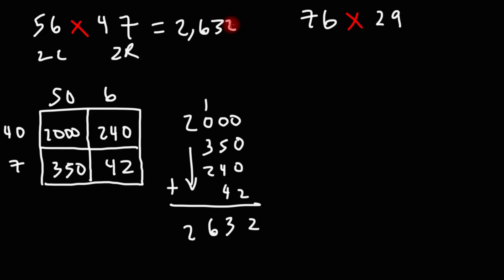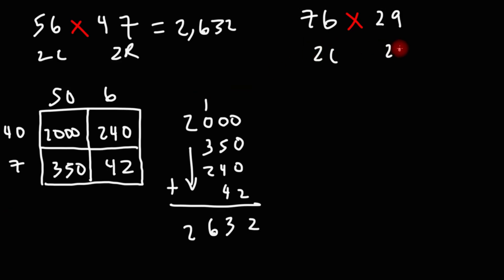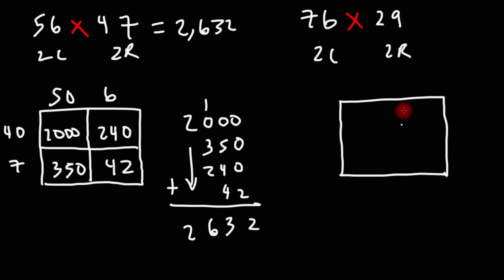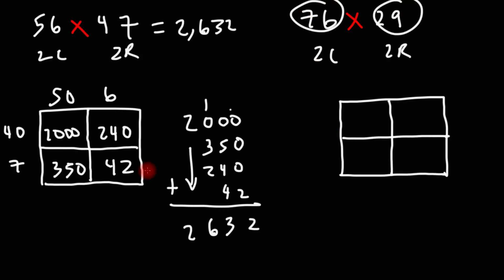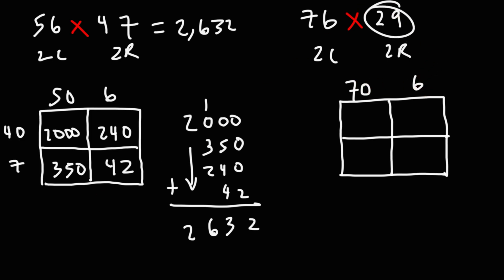Now let's move on to the next example. We're multiplying a two-digit number by another two-digit number, so we need two columns and two rows. Let's create our box and expand these numbers. 76 is 70 plus 6, and 29 is equal to 20 plus 9.